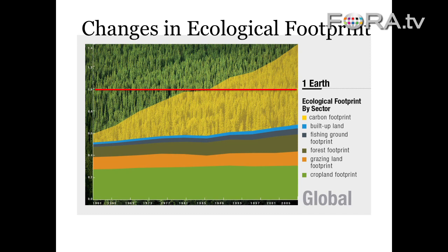Grazing land is also fairly constant. You're not seeing a doubling of these ecological demands — these takeaways from the planet's biosphere. That's also because of modern agriculture: animals are in feedlots. They're not grazing on open land anymore. So that looks constant and looks good on this graph, but the result is not so great.